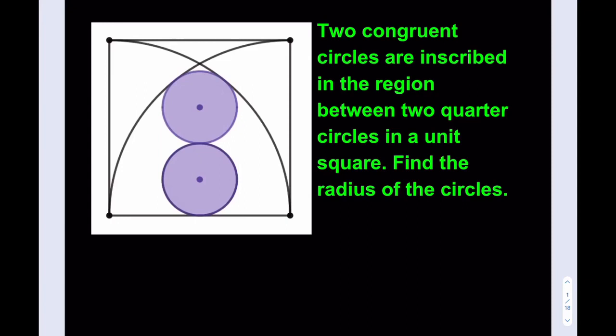Hello everyone, in this video we're going to be solving a geometry puzzle. Two congruent circles are inscribed in the region between two quarter circles in a unit square. Find the radius of the circles.